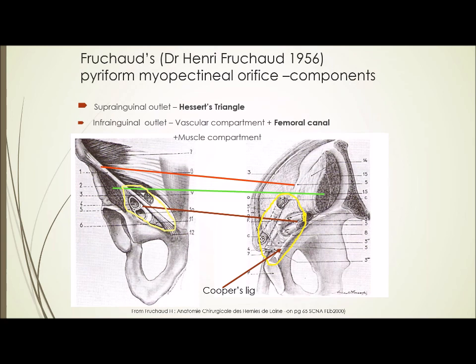The myopectineal orifice has two components: the supra-inguinal (also known as Hesselbach's triangle) above the inguinal ligament, and below it, from lateral to medial: the muscle compartment, the vascular compartment, and the femoral compartment. These three parts of the inguinal region are seen from outside and from inside - it is just turning the page inside out. Looking from inside, you find the iliopsoas muscle, the vessels entering into the thigh, the lacunar ligament, Cooper's ligament, the femoral opening, and the femoral canal.